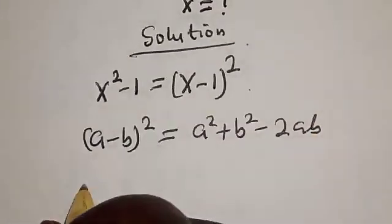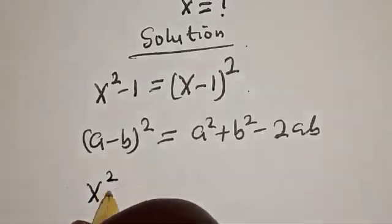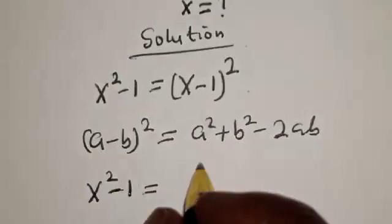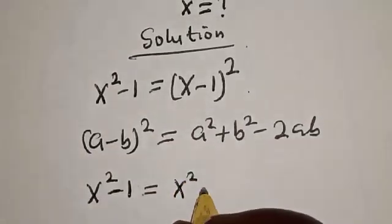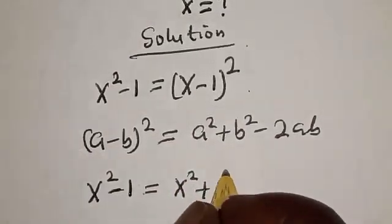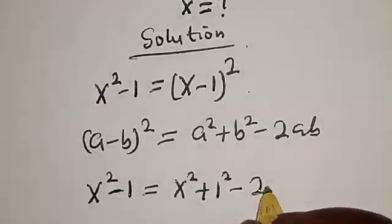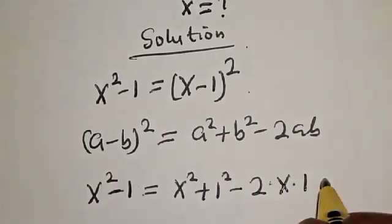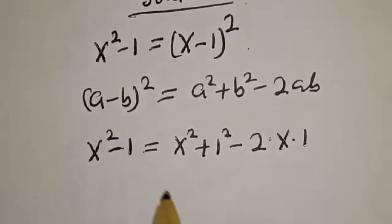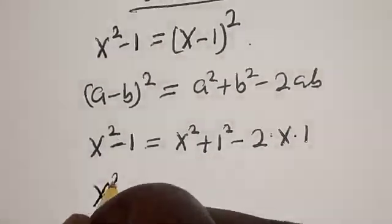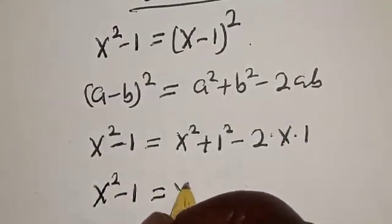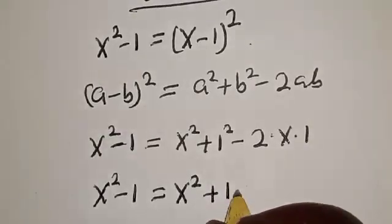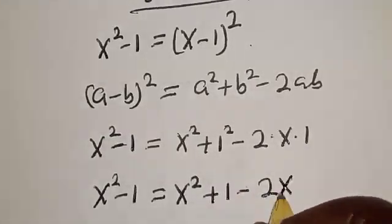So x square minus 1 equals, let's substitute this: x square plus 1 square minus 2 multiply by x multiply by 1. So x square minus 1 equals x square plus 1 minus 2x.